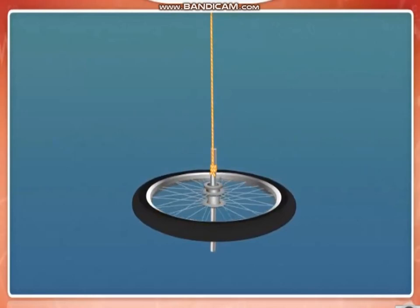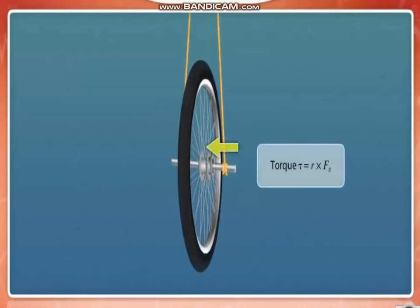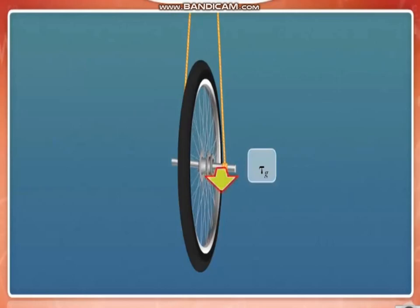Let's understand this phenomenon. There is torque acting on the wheel due to the gravitational force. The direction of torque and angular momentum is as shown. Hence the wheel swings in the anti-clockwise direction as shown.